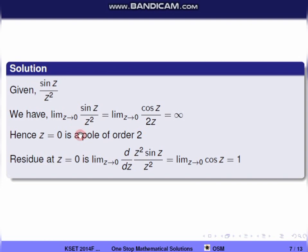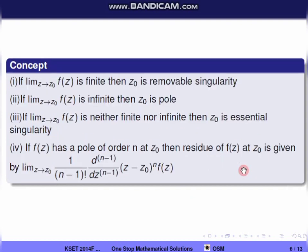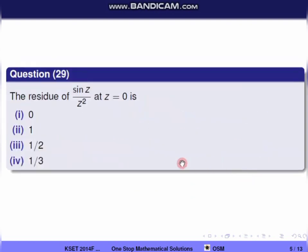Now we compute the residue. Limit z tends to 0, 1/1 factorial times the first derivative of z² times sin(z)/z². That equals limit z tends to 0 of d/dz of sin(z), which is limit z tends to 0 of cos(z). So cos(0) equals 1. The residue value is 1. The correct option is the second one.